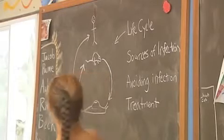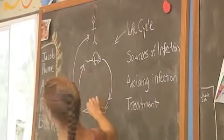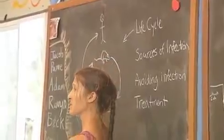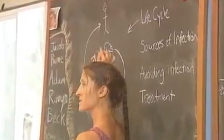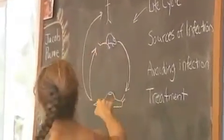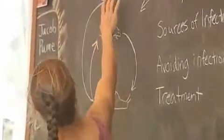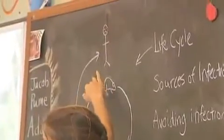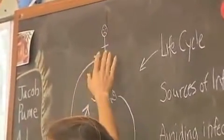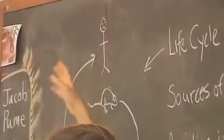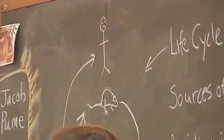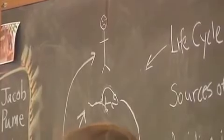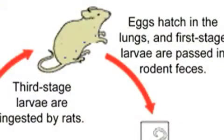The nematode is a parasite of a slug and a rat, and it alternates between those two hosts. In the human life cycle, it takes the place of the rat, but we're not the perfect host so it doesn't complete its life cycle in us – it just causes horrible pain and suffering.